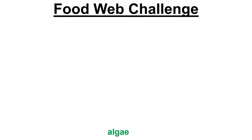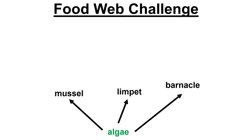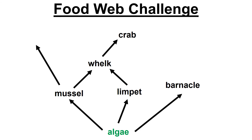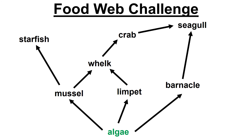It should look like this. Our producer is algae, consumed by those three. Then mussel and limpet are both consumed by whelk. Whelk is consumed by crab. Mussel is also consumed by starfish. And crab and barnacle are both consumed by seagull. Your diagram might be a different shape, but just check: you should have eight living things and nine arrows.